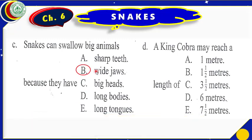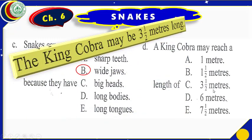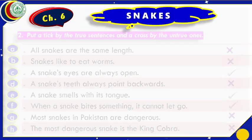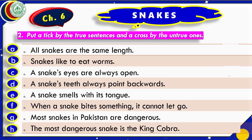A king cobra may reach a length of — ? We have read it is about three and a half meters. We can see in the lesson: 'The king cobra may be three and a half meters long.' Let us choose option C because that is the correct one. Dear students, we have done the first exercise of this lesson.